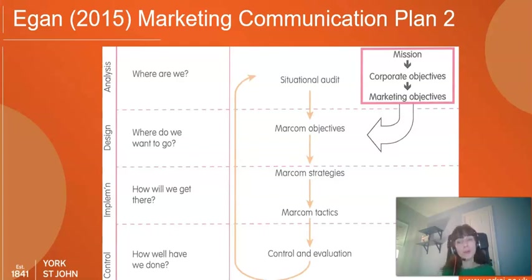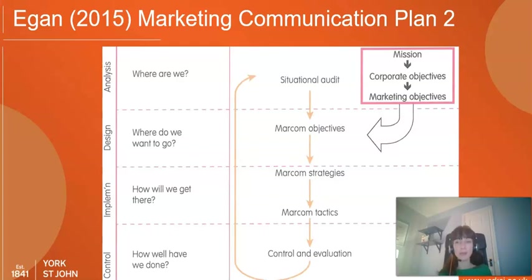Our marcom strategies involve understanding — just as with our marketing strategy — who our target audience segments are. Once we have that clear picture, we can select the right tactics: how we're going to brand this, what our communication messages are, and which media we'll use to deliver on them. Then we implement our tactics, run campaigns, observe the results, and control and measure.